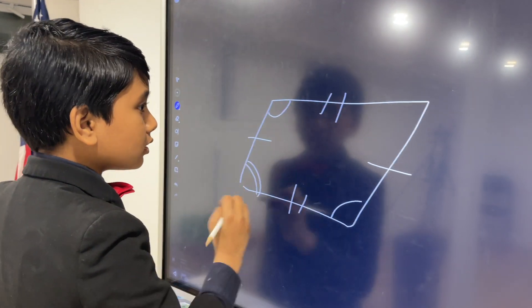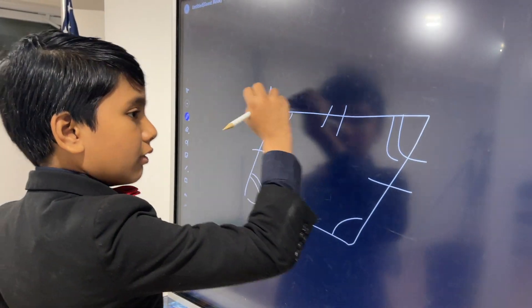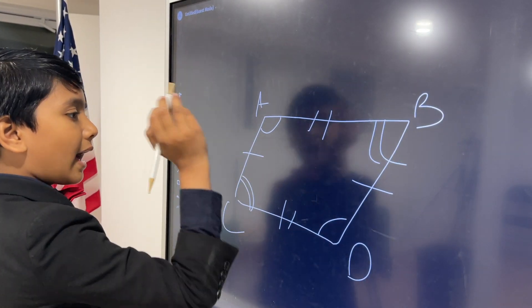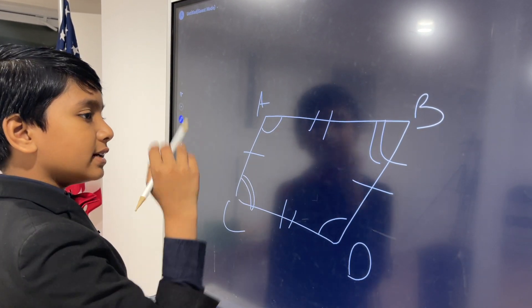Also, opposite angles are congruent. So, we have A, B, C, D, then we have A congruent to D, and C congruent to B.